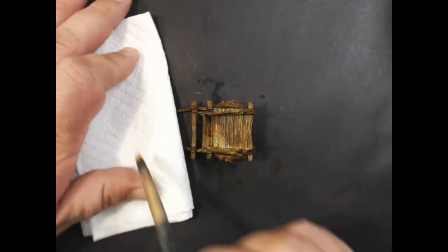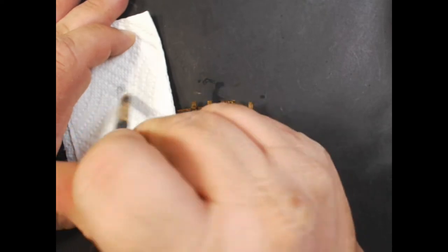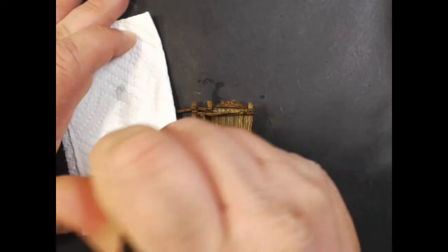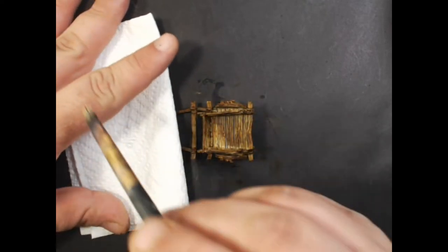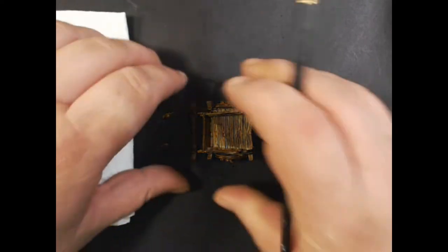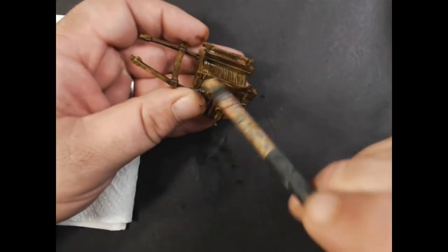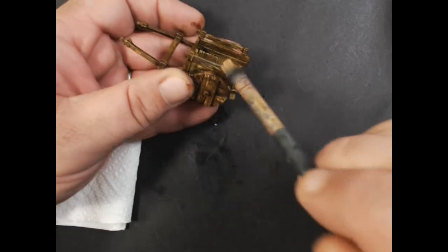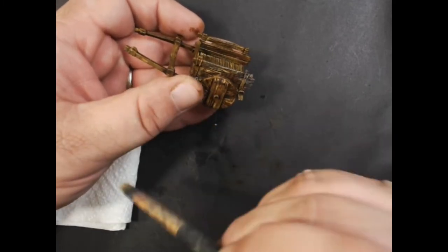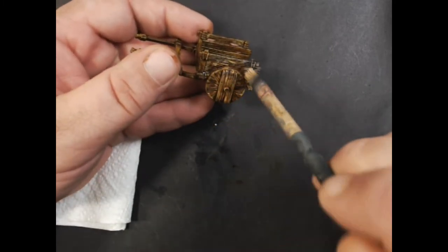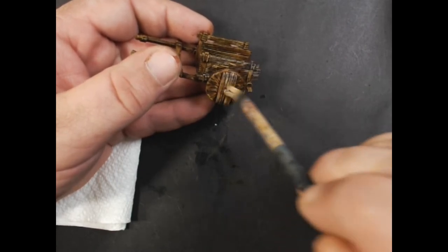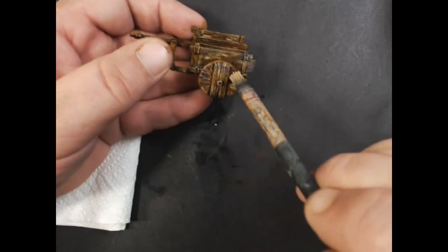Then we're going to take some Secret Weapon Weathered Wood and dry brush very lightly. Make sure to get almost all of the paint off your brush. I like to use a flat brush when I dry brush and I generally try to go against the grain when I'm doing wood or fur.